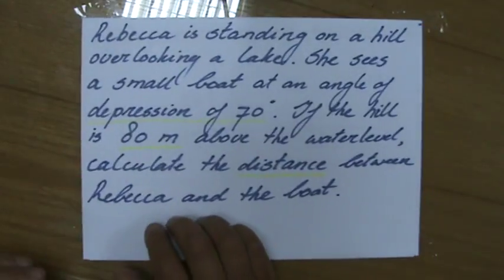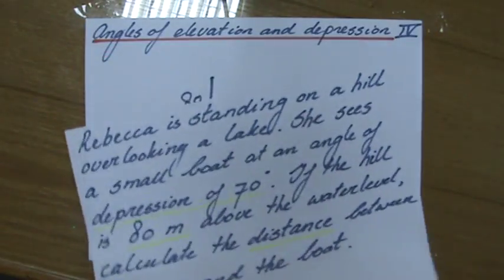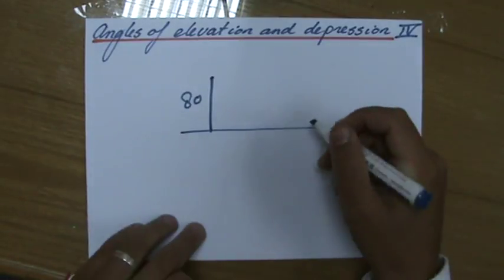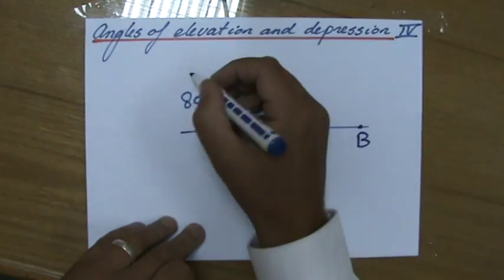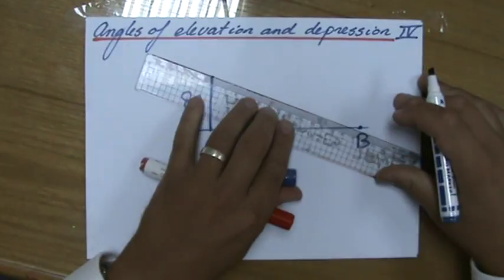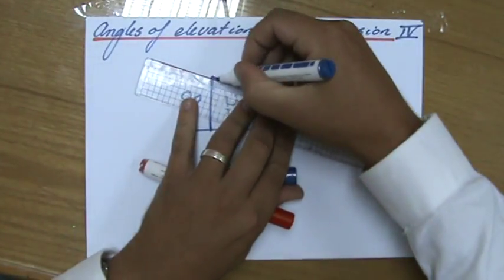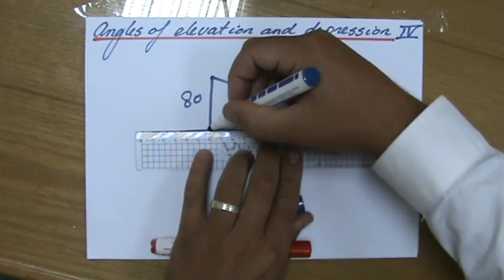Rebecca is standing there at the top. She sees a small boat at an angle of depression of 70 degrees. So that boat is here somewhere in the water. I can draw that line. And as you can see now, I have a right-angled triangle.